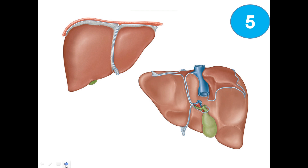Here we can see the anterior and posterior view of the liver. The most superior structure is the diaphragm. Here is the left lobe, here is the right lobe, and this is the falciform ligament. This is the gallbladder.